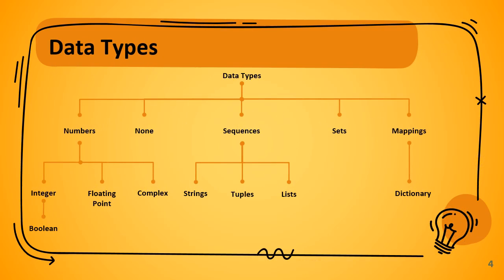There are five sets of data types available in Python: numbers, which handles numeric values; None, a special data type; sequences, which hold multiple elements together; sets, which also hold elements together; and mappings.